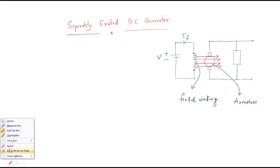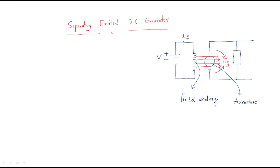Whenever the field flux flows through the armature, the armature generates an EMF. To measure the power generation, we connect a load — which may be resistive R or RL — to the output. From the generated EMF EG, the armature current flows and enters into the load. The armature itself has an armature resistance RA, and brushes are used to collect the current from the armature.